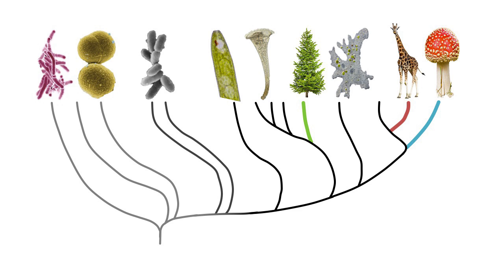All life that exists today on our planet has evolved from a single ancestor. This ancestral species split up into two species, which then split up into four species, and so forth, so that the relationships among the species on Earth can be represented as a branching pattern similar to a tree. That's why we call the evolutionary relationships of life sometimes the tree of life. If you find this diagram a bit confusing, don't worry — in the second module I will explain how to read evolutionary trees.